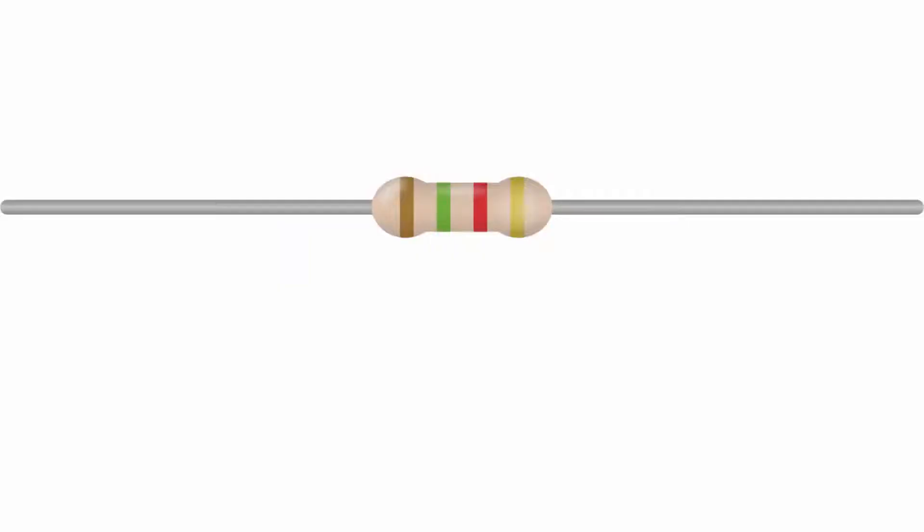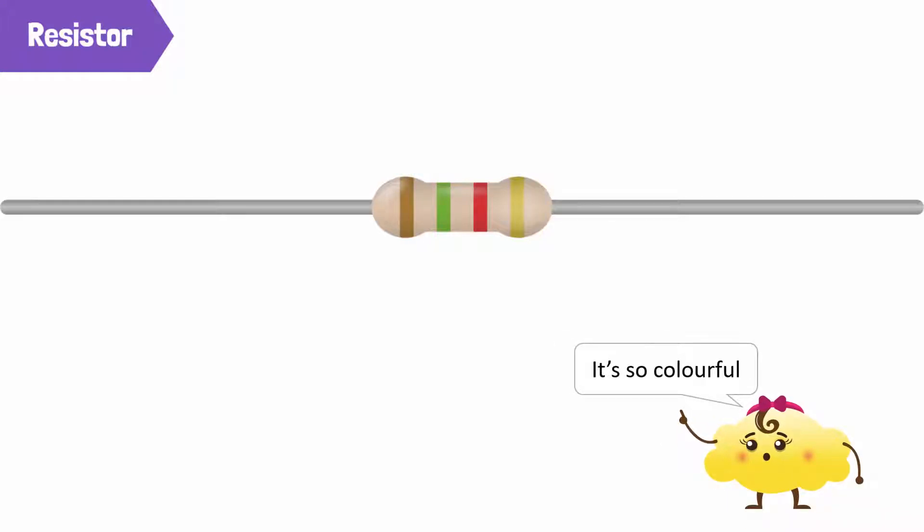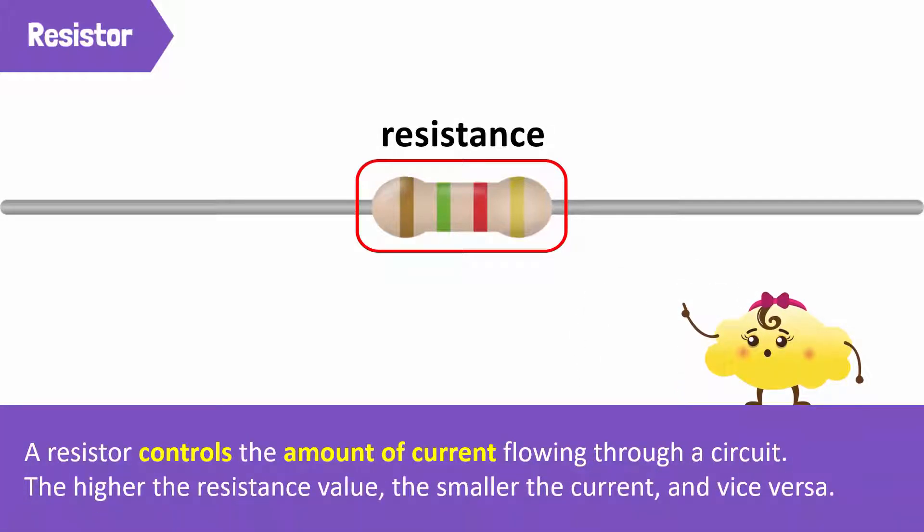This tiny component is called a resistor. It's so colorful! Yes, the colors show how much resistance value the resistor has. A resistor regulates the amount of current flowing through a circuit. The higher the resistance value, the smaller the current, and vice versa.